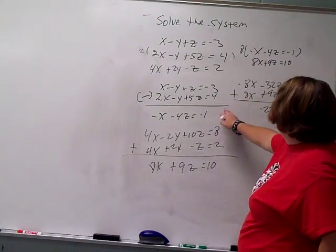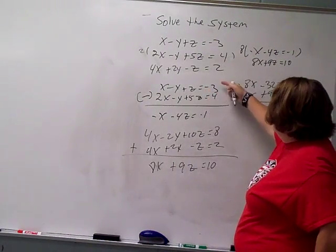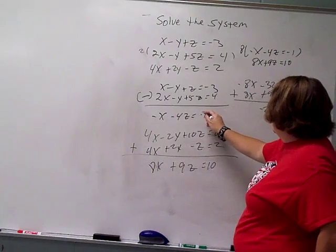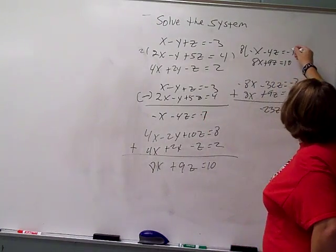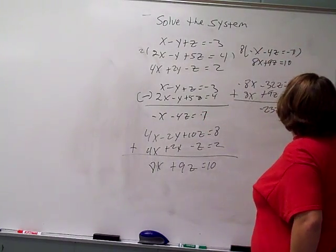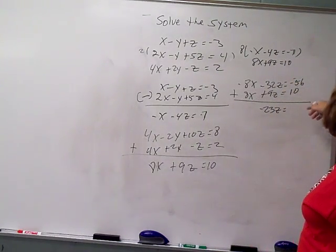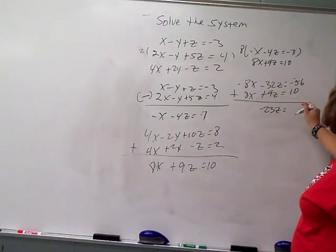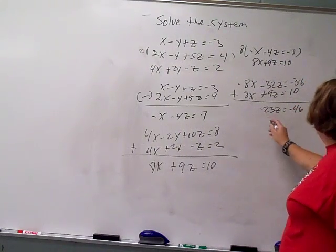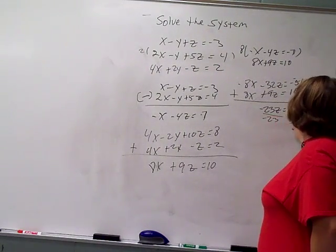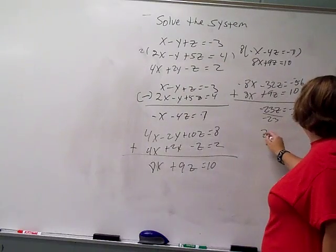Okay, back here I made a mistake. This was a negative 3 here. So negative 3 minus 4, that would make this a negative 7. So when I multiplied this 8 times negative 7, that was negative 56. I knew something didn't look right. Sorry about that. So now I keep my addition here. Negative 56 plus 10 is negative 46. So now I divide that by negative 23. And z would be 2.